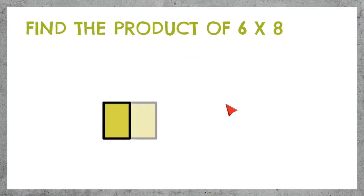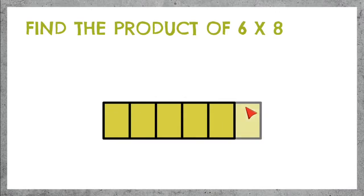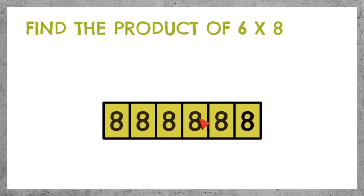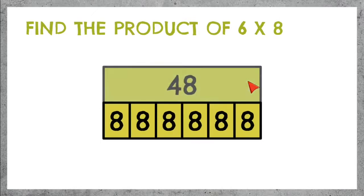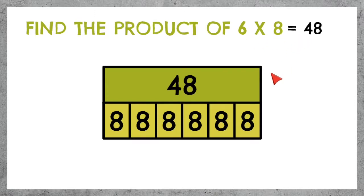6 times 8 — we need our 6 parts with 8 inside of each of those parts. If we add up 8 six times, we get 48. So we know that 6 parts of 8 equals 48.